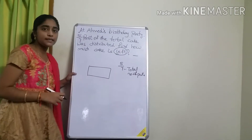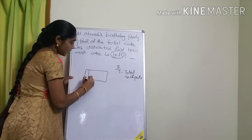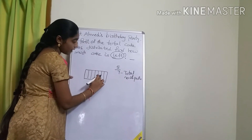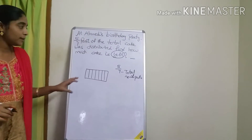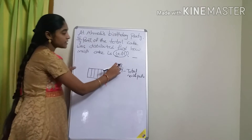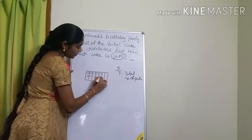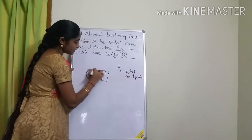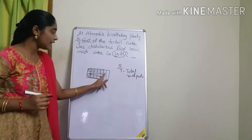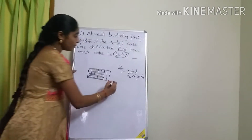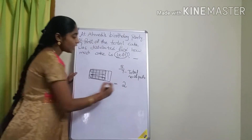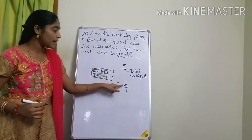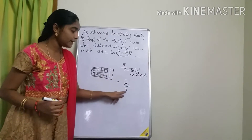One cake is divided into 7 pieces. Out of 7 pieces, how many were distributed? 5 pieces. They are asking how many are left — 2 pieces are left. So 2 out of 7 total parts means the answer is 2/7. 5/7 is distributed and 2/7 is left.